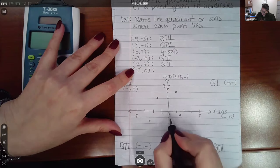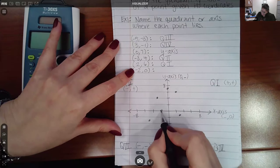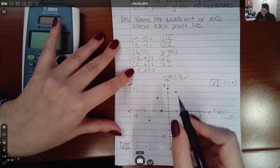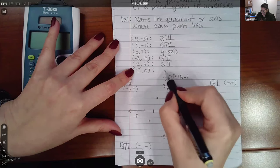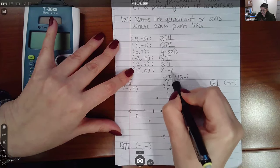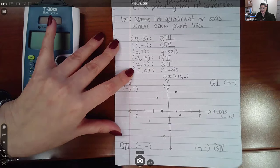And then finally I have negative two for my x value, but zero for my y value. So notice I have no y value, I only have an x value, which makes this land on the x axis.